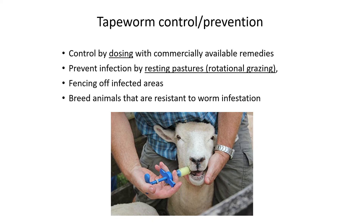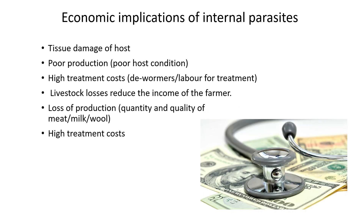Farmers can control tapeworms through dosing with certain remedies or medication, and by resting pastures through rotational grazing. Fencing off infected or wetland areas prevents animals from accessing them. If areas can't be drained, preventing animal access is the best option. Farmers should also breed animals resistant to worm infestation — selecting individuals in the herd that are unaffected and breeding from them to reduce the number of affected animals over time.